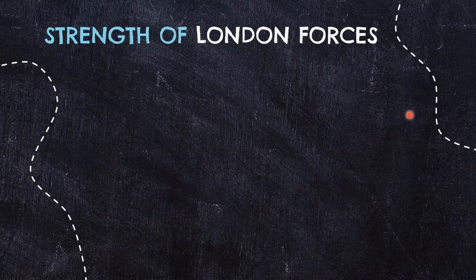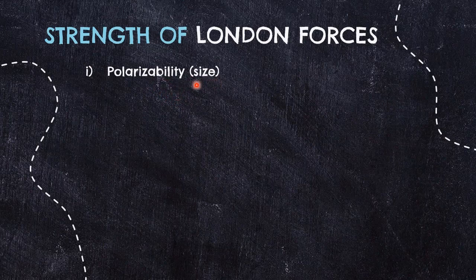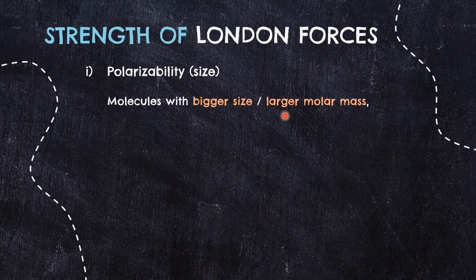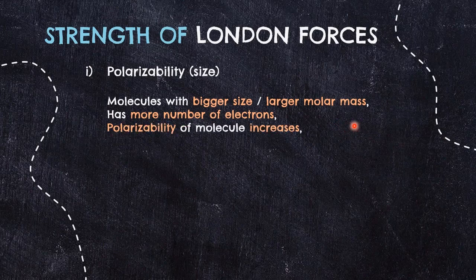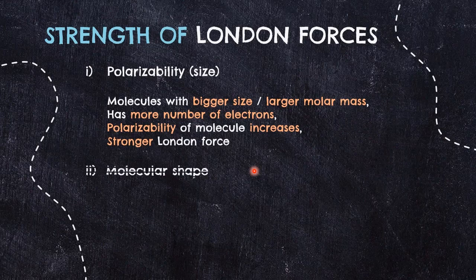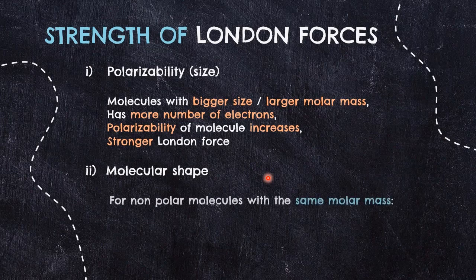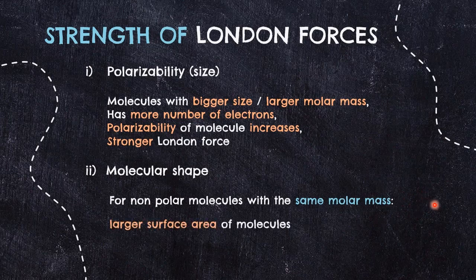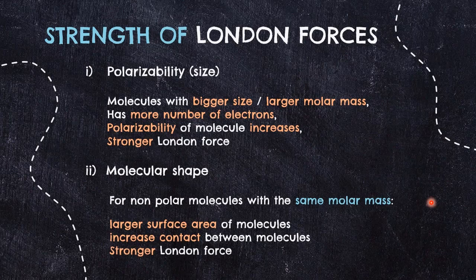The strength of London forces is influenced by two different factors. First is polarizability — referring to the proportion of electric dipole moment acquired when subjected to an electric field. We usually just look at molecular size to assess polarizability. A bigger molecule with a greater number of electrons will have higher polarizability, resulting in stronger London forces. The second factor is molecular shape, which is considered when molecules have the same molecular mass — in other words, the same size. Whether they are a straight chain or have branches affects their surface area. A bigger surface area from a straight-chain molecule increases contact with neighboring molecules, making London forces stronger.